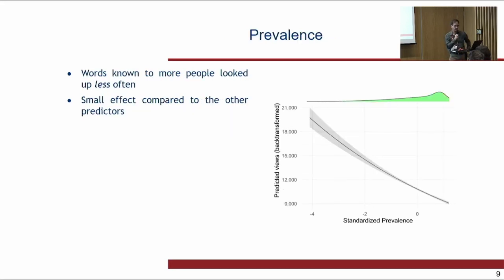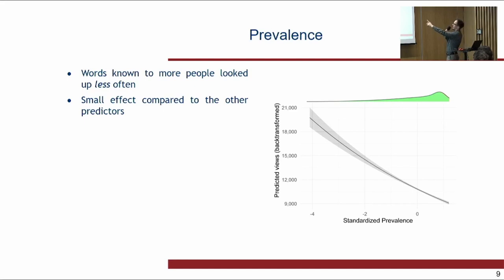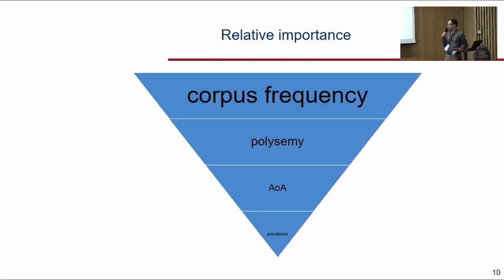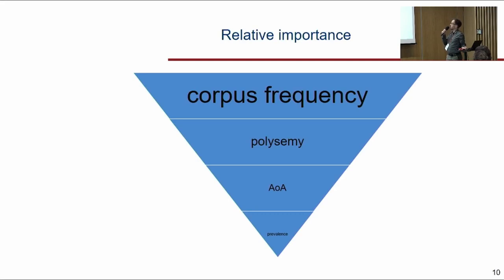Finally, the prevalence effect: words known to more people are looked up less often, which makes sense. However, this is a quite small effect compared to the other predictors — views go from around 9,000 to 21,000 on average, a much narrower range than frequency. To summarize, the hierarchy of predictors is: corpus frequency by far the most important, then polysemy and age of acquisition, and prevalence down the line.